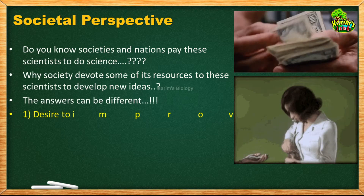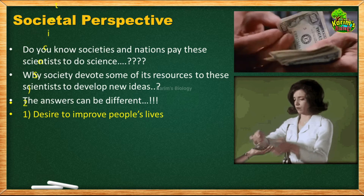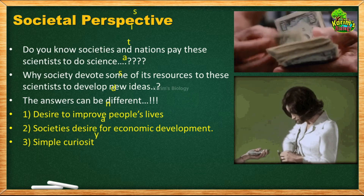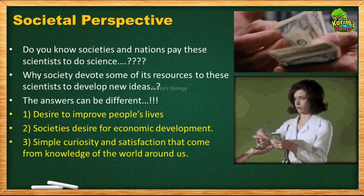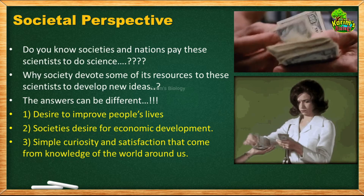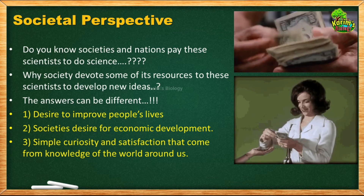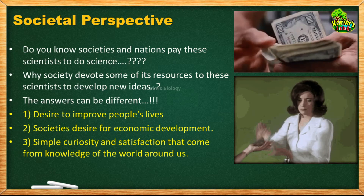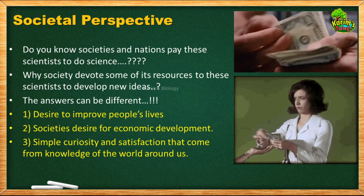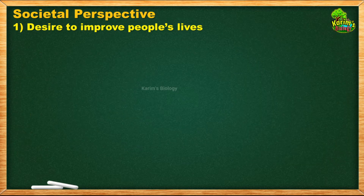Why do people in society provide money to scientists? The answers can be different. First, there may be a desire to improve people's lives. Second, society's desire for economic development. Third, even simple curiosity and satisfaction — some people get curious and are satisfied when that curiosity is fulfilled by gaining knowledge. These are the three reasons why people in society pay money to scientists.